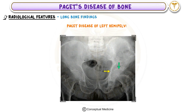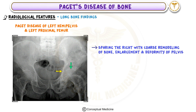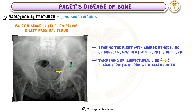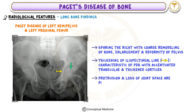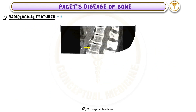Paget's disease of the left hemipelvis and left proximal femur, sparing the right, shows coarse remodeling of bone, enlargement, and deformity of the pelvis. There is thickening of the iliopectineal line, so characteristic of Paget's disease of bone, with accentuated trabeculae and thickened cortices. Protrusion and loss of joint space are present on the left.